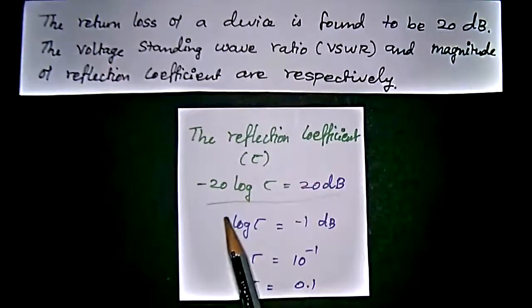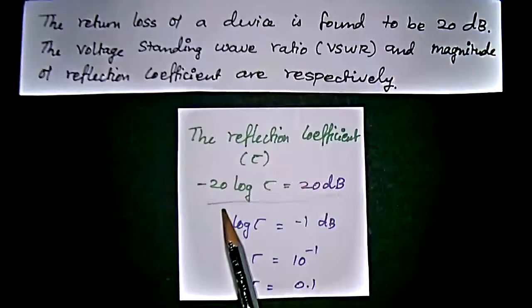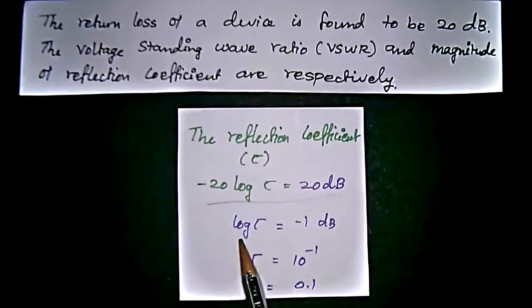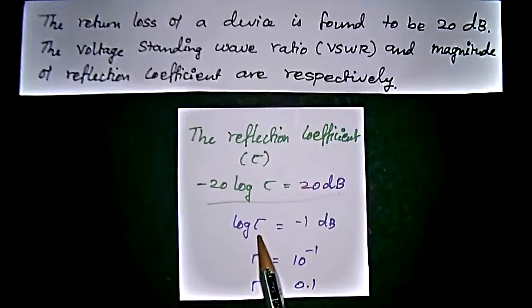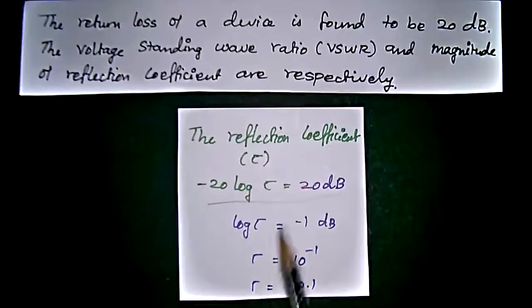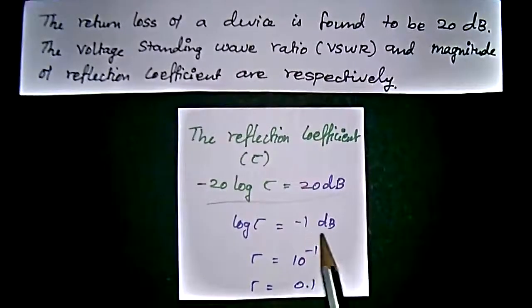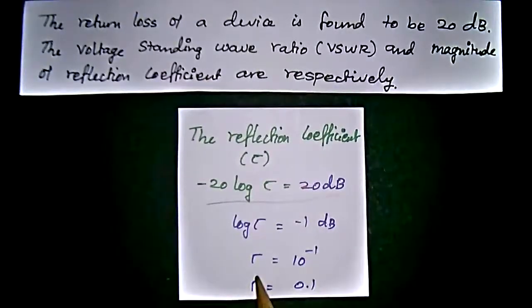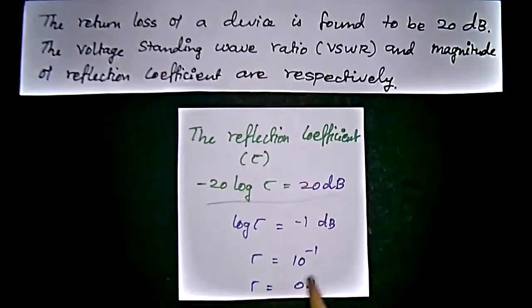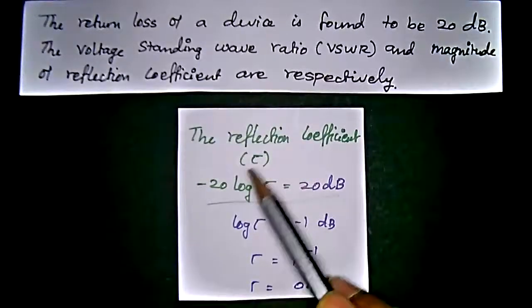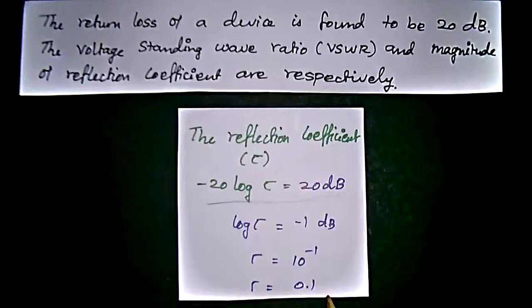We have the formula as minus 20 log reflection coefficient equal to 20 dB. So, log tau is equivalent to, this 20 and 20 could be cancelled, we will get minus dB, minus 1 dB. So, tau is equal to 10 power, removing the log value, so we will apply the 10 power, so we will get 10 power minus 1, which is tau value is 0.1. So, reflection coefficient value is 0.1.